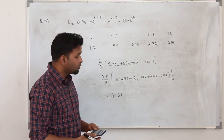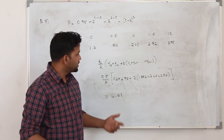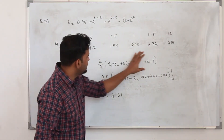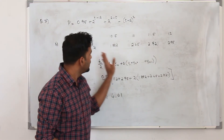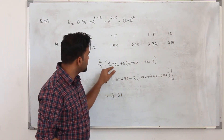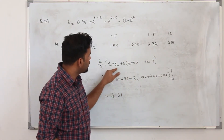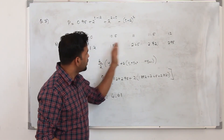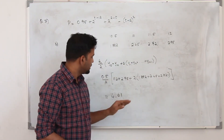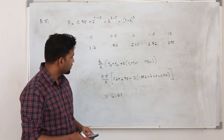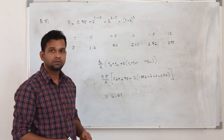The answer to 2 decimal places is 4.61. You need to know the trapezium rule — plug in all the y values from y₀ to yₙ and you get the final solution.